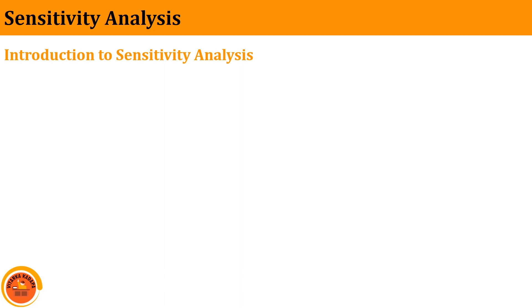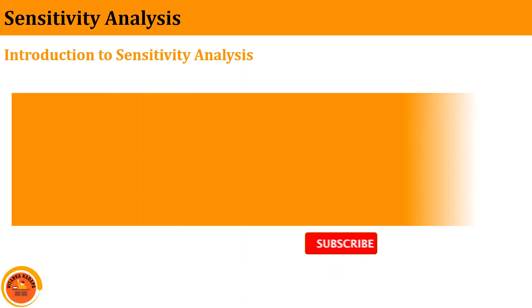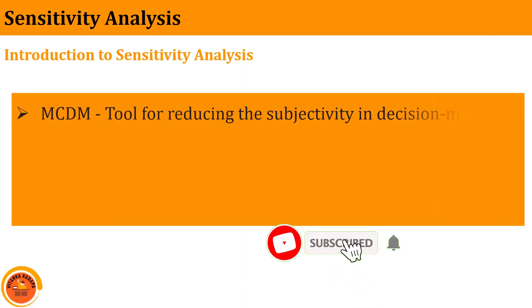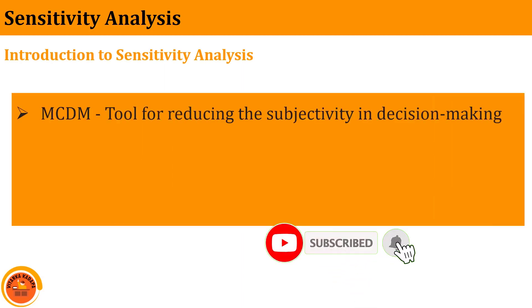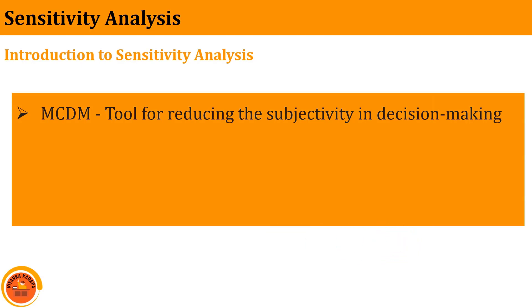Coming to the introduction, basically every multi-criteria decision making method is a tool for reducing the subjectivity in decision making by creating a series of filter selection and helping to make choices among complex alternatives.